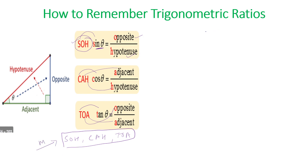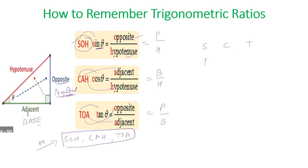In old convention, the opposite side is written as perpendicular and the adjacent side is written as base. So in old terminology: opposite means perpendicular, adjacent means base. Therefore, sine equals perpendicular upon hypotenuse (P/H), cosine equals base upon hypotenuse (B/H), and tangent equals perpendicular upon base (P/B). You can remember this as: sin = P/H, cos = B/H, tan = P/B.